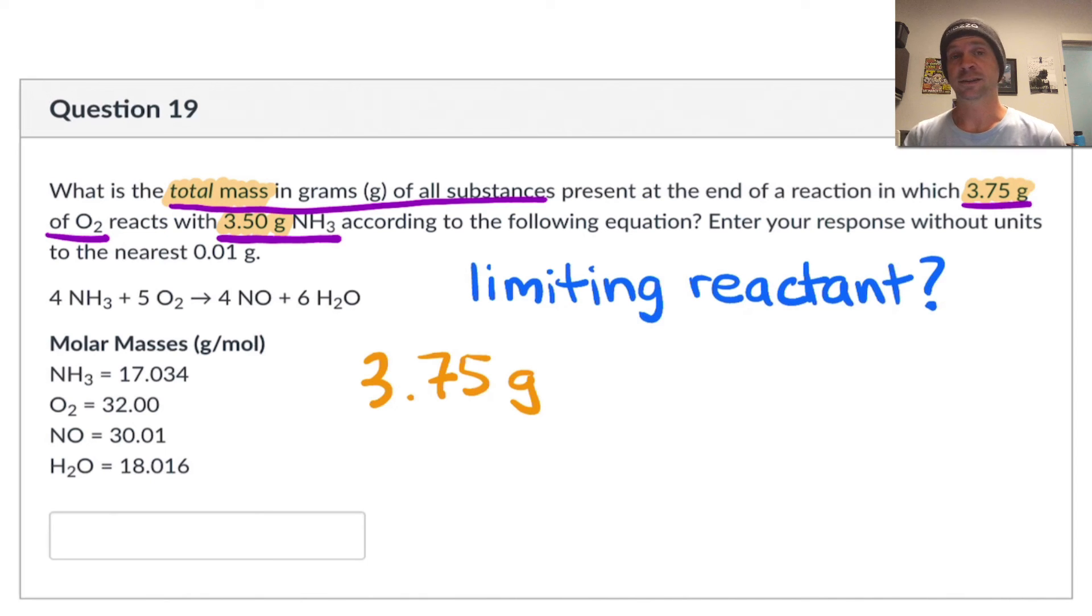Now at the end of the reaction, that's not necessarily O2, that mass has distributed itself between NO and H2O, but it's still there. And similarly with the NH3, 3.50 grams, well that's not all NH3 at the end of the reaction, but those nitrogens and hydrogens have redistributed themselves among the products H2O and NO, but they're still there.